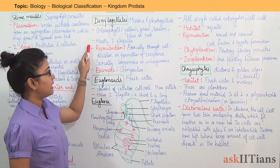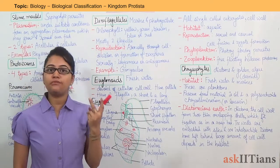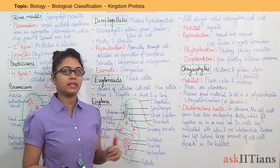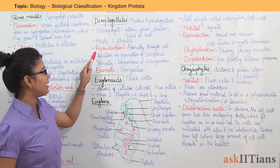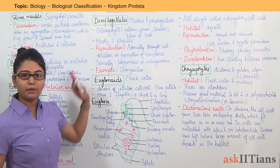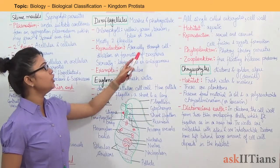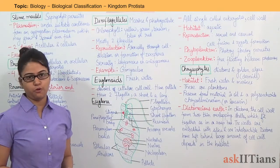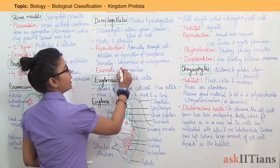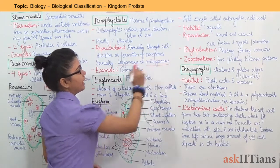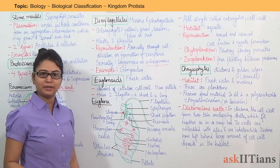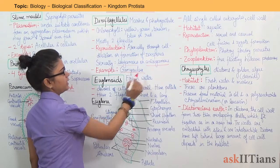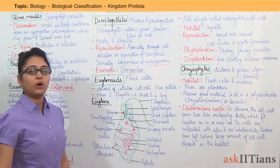Dinoflagellates mostly have two flagella — we will discuss how in the next part. Mode of reproduction: asexually through cell wall formation or zoospores, and sexually through isogamy or anisogamy. An example of a dinoflagellate is Gonyaulax.